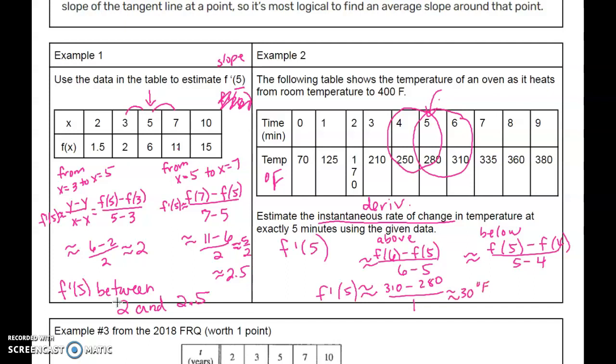And f'(5) from below is 280 minus 250 over 1, so we get 30. This time both sides end up being the same. So f'(5) is approximately equal to 30 degrees Fahrenheit per minute. They don't ask for a label, so you don't have to have it, but if they're the same, then you found it.